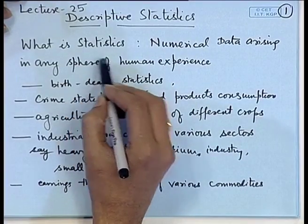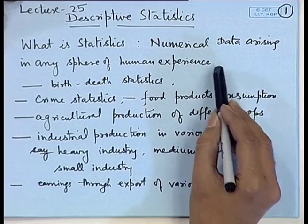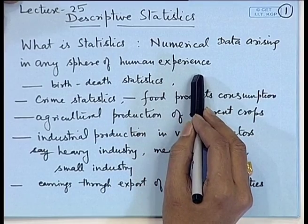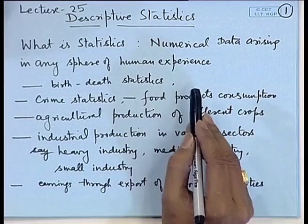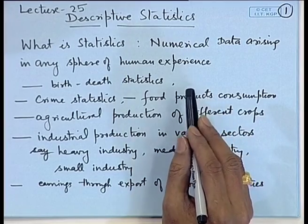We will first introduce what the term statistics refers to and its historical development. In this section, we will cover the various types of statistics that are used and also the representation of data through statistics. In the plural sense, when the word statistics is used, it refers to numerical data which arises in any sphere of human experience. From the following examples, I will try to show that everywhere we are making use of statistics.